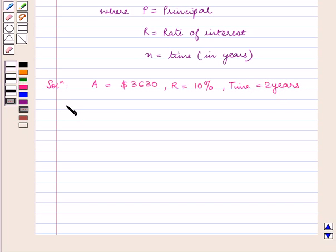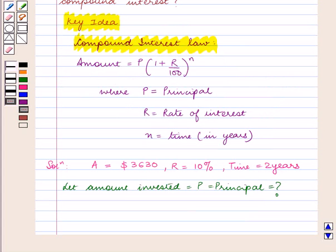Let the amount invested be equal to P, which is the principal we need to find. The compound interest law is: Amount equals P times (1 plus R by 100) raised to power N.